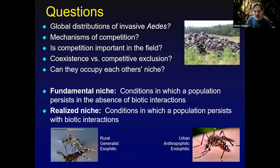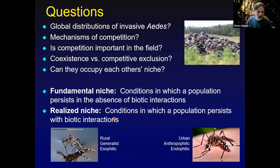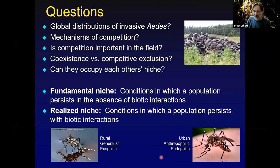In terms of the ecological niche of these two species, broadly speaking, they are container dwellers, residing in things like discarded tires. When people think about Aedes albopictus, they largely think of it as a rural generalist feeder that is exophilic — that is, it principally bites outdoors. When people think about Aedes aegypti, they think of it as an urban species, anthropophilic — preferring to bite humans — and largely endophilic. As you'll see, those are oversimplifications of the ecology of these species.